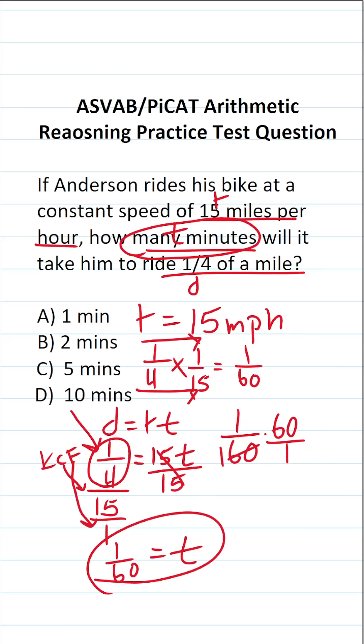60 goes into 60 one time. 60 goes into 60 one time. This is 1 over 1 times 1 over 1. 1 times 1 is 1. So 1/60th of an hour is 1 minute.